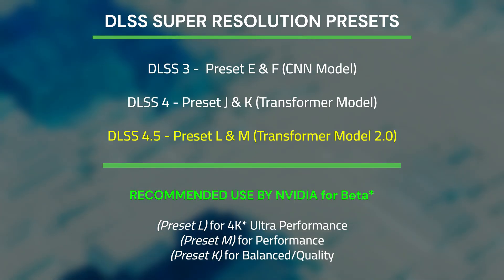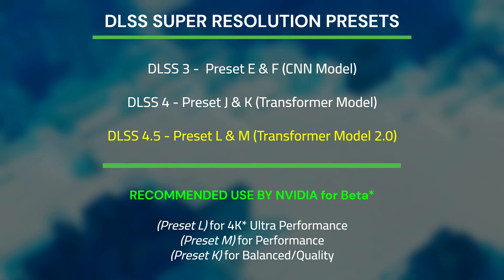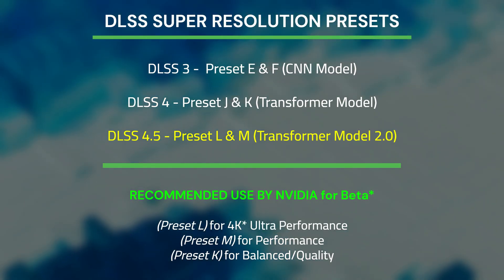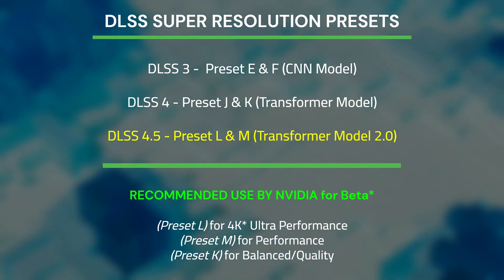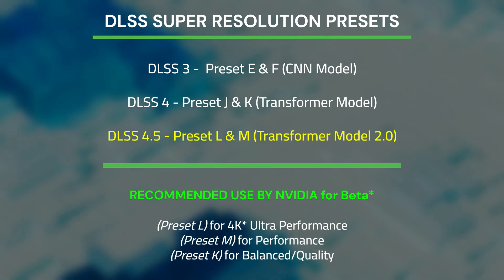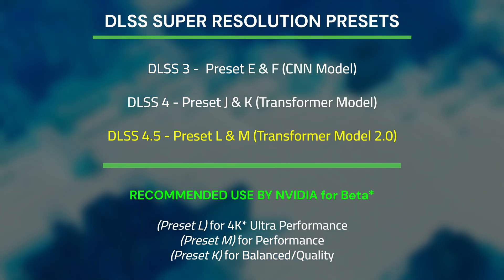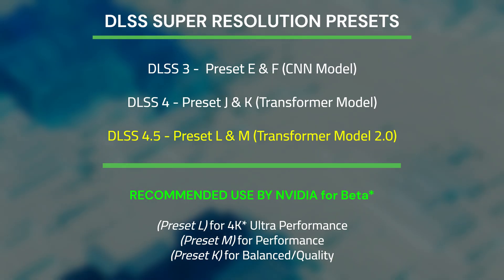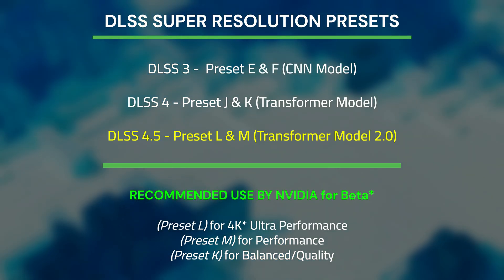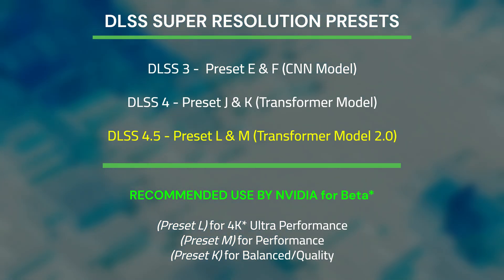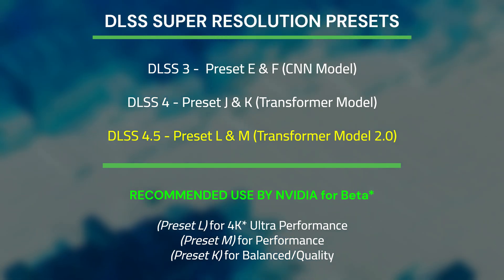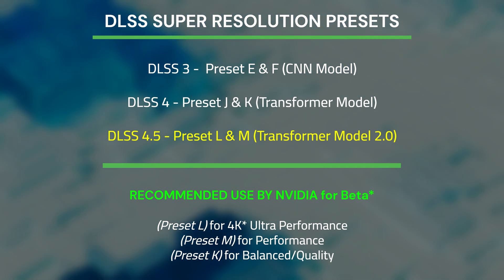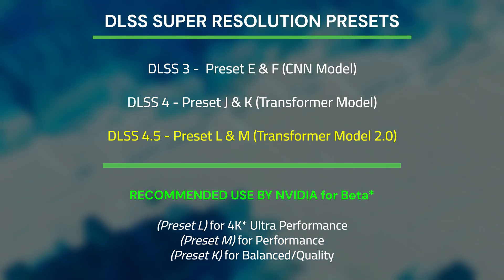Let's go over NVIDIA's recommendation for how to use these presets. Preset L was made to be used in ultra performance mode at 4K, though in my opinion it's also usable at 1440p. Preset M was made for performance mode, as it can be significantly heavier than preset K at higher quality options. Preset K should be used for balanced or quality — it's still going to be the go-to preset for a lot of users since it's the best balance of image quality and performance.